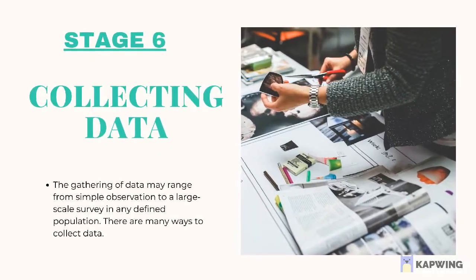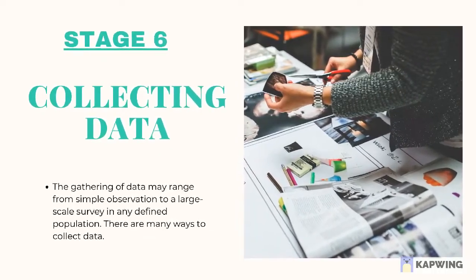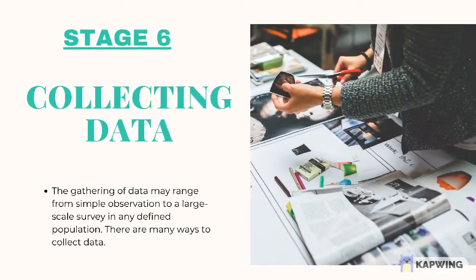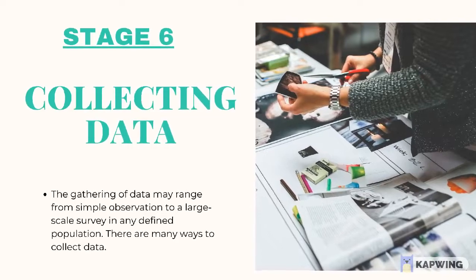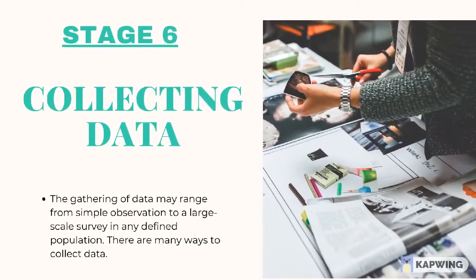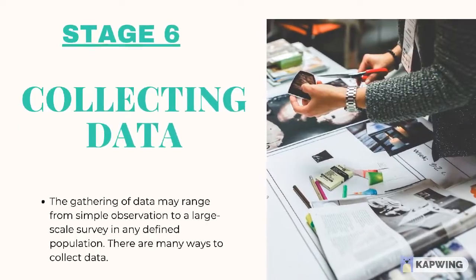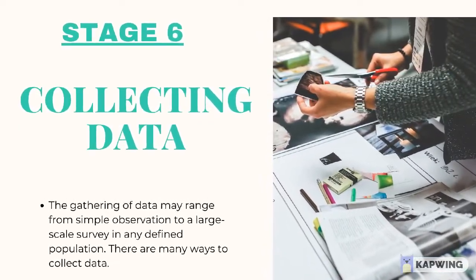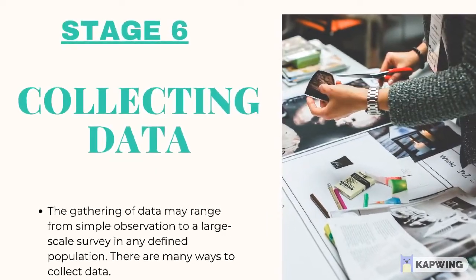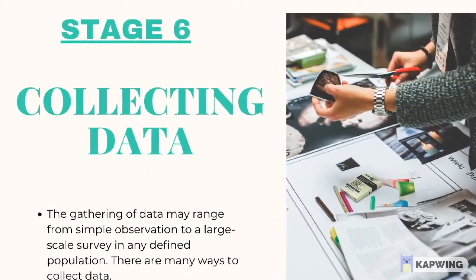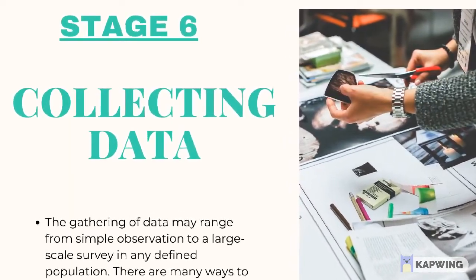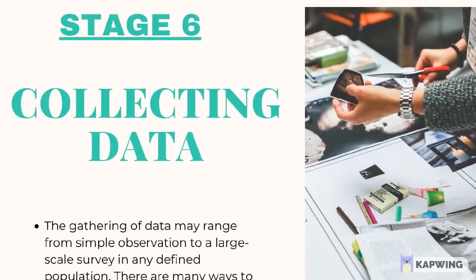Step 6: Collecting data. The gathering of data may range from simple observation to a large-scale survey in any defined population. There are many ways to collect data. The approach selected depends on the objectives of the study, the research design, and the availability of time, money, and personnel. With the variation in the type of data — qualitative or quantitative — to be collected, the method of data collection also varies. The most common means for collecting quantitative data is the structured interview.